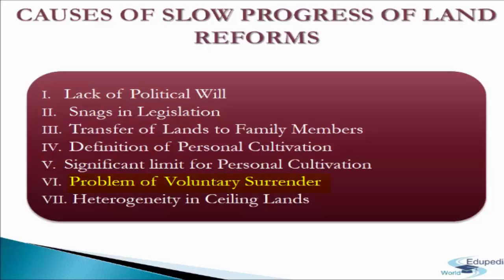The next point is the problem of voluntary surrender. The landlords created unfavorable conditions for the tenants, forcing them to voluntarily surrender the land cultivated by them. The tenants were threatened, beaten up and mentally harassed, leaving them no option but to surrender their land voluntarily. The last cause is heterogeneity in ceiling lands. The levels of ceiling as among states and within areas of some states differed significantly till 1972, which created a lot of confusion and dispute.